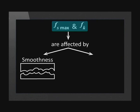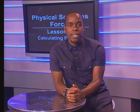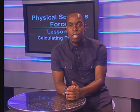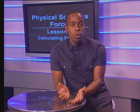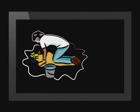So FS max and FK are affected by the smoothness of the surfaces. The smoothness of the surfaces depends on the material that the surfaces are made of and also how they have been treated. For example, polish can make it flow smoother.